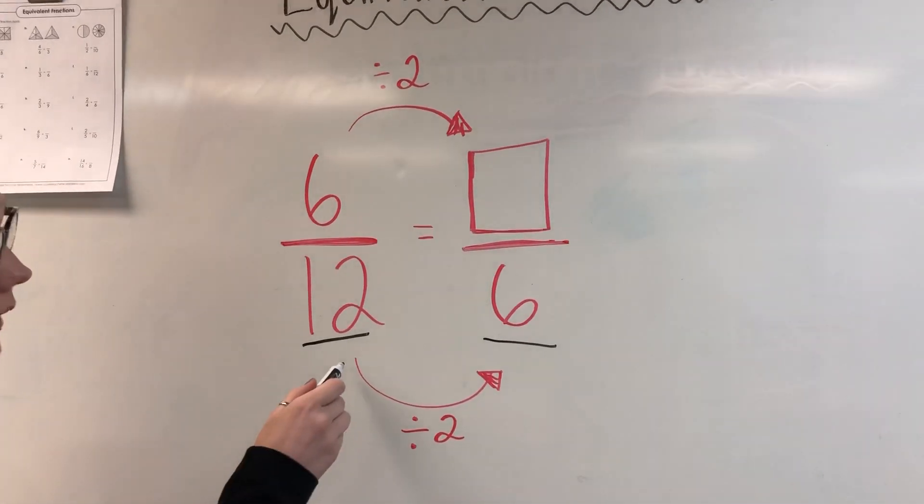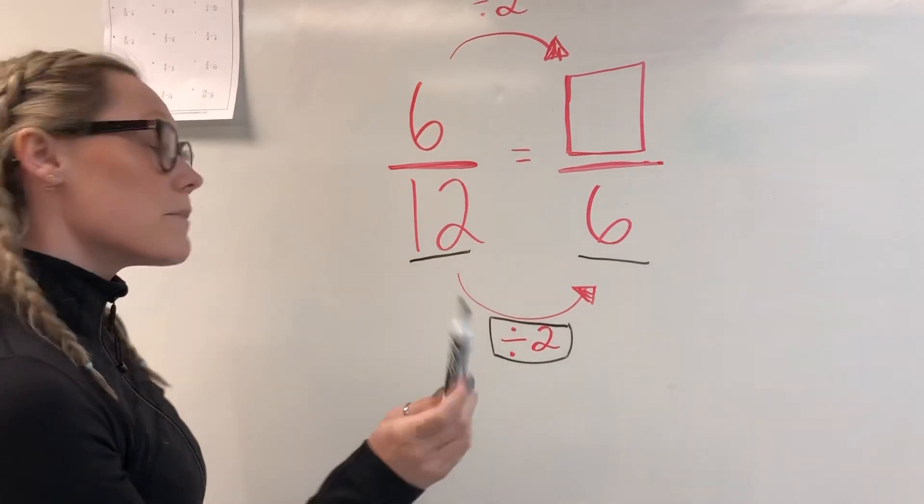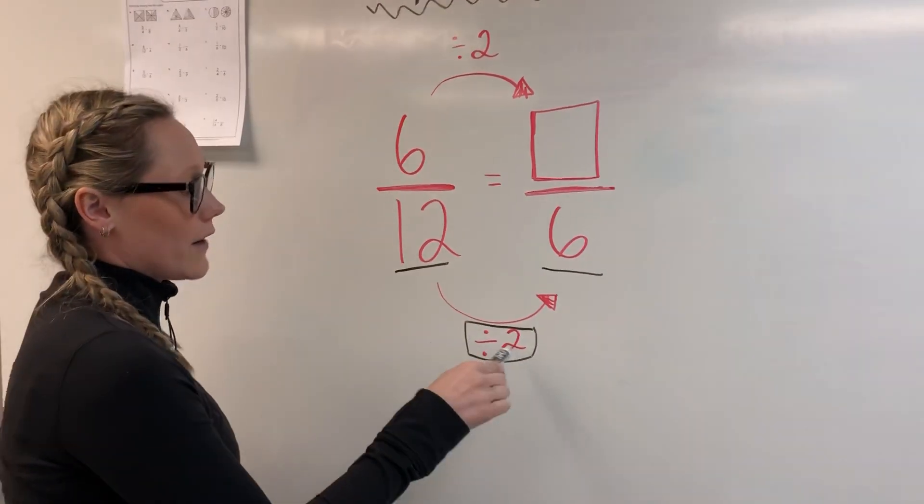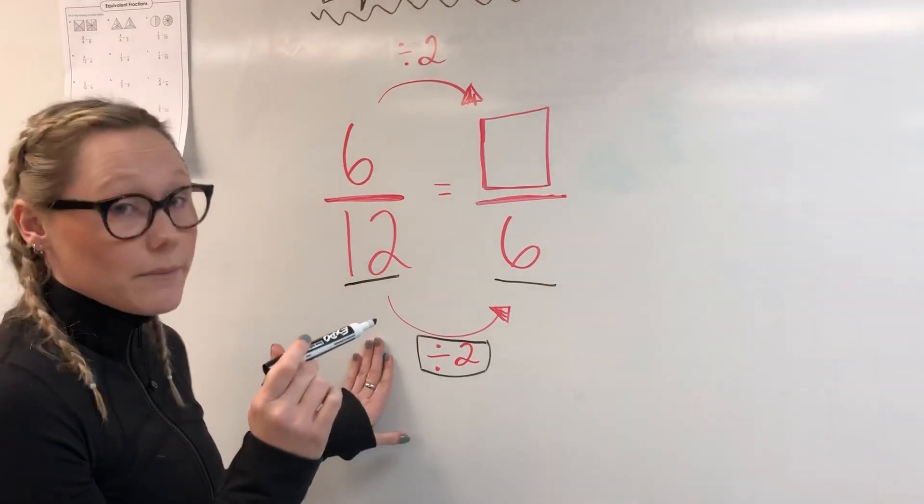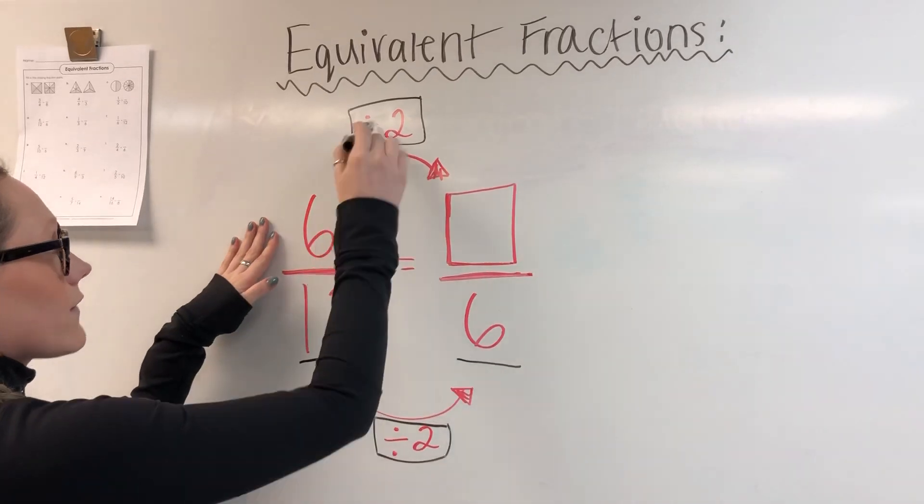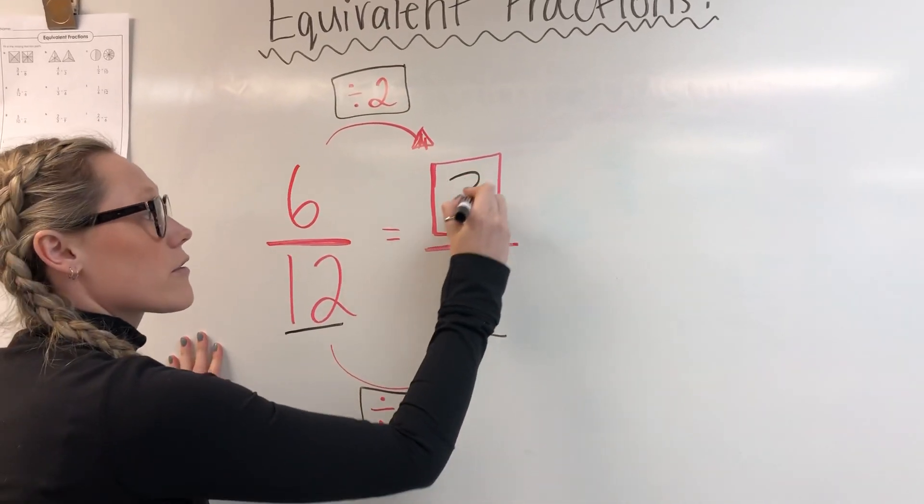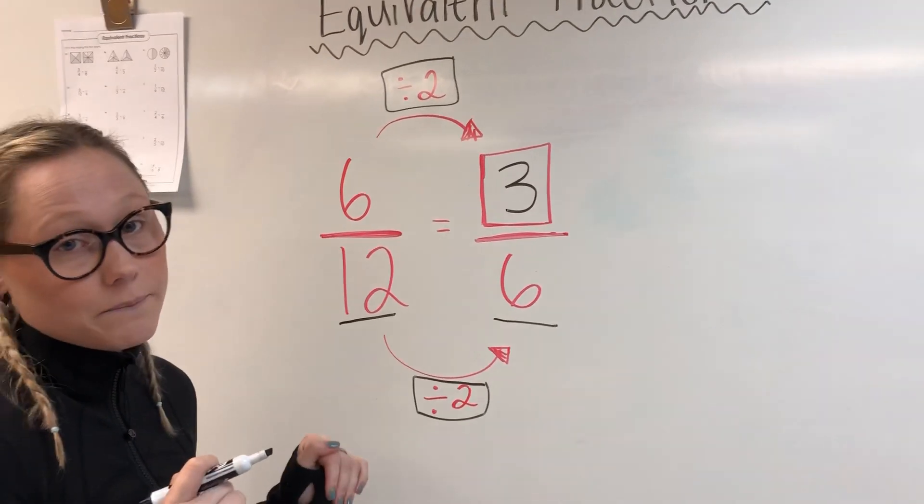Well, I divide by 2, right? Not multiplying by 2 because it's less. So I'm dividing by 2, I get 6. Well, what I do to the bottom, I must do to the top. So I'm going to do 6 divided by 2 is 3. That gives me my equivalent fraction.